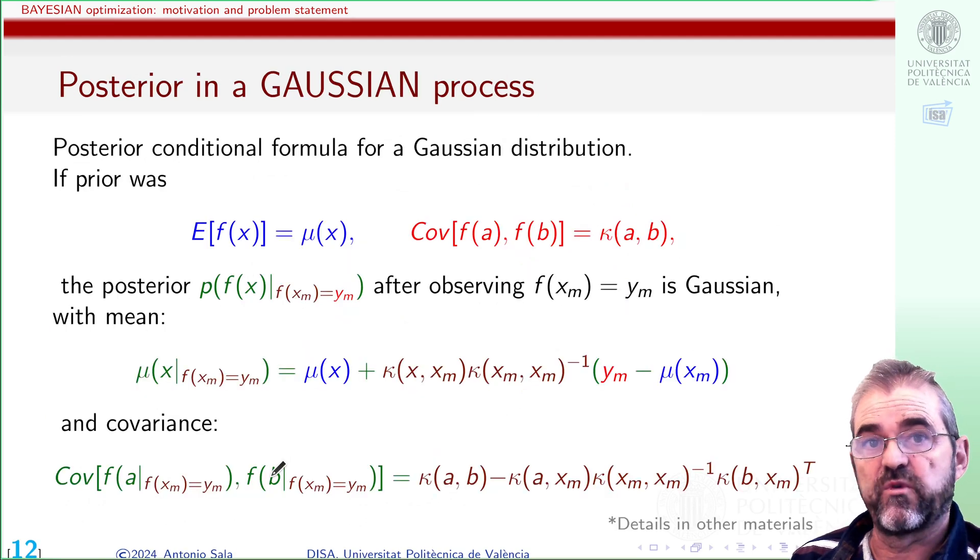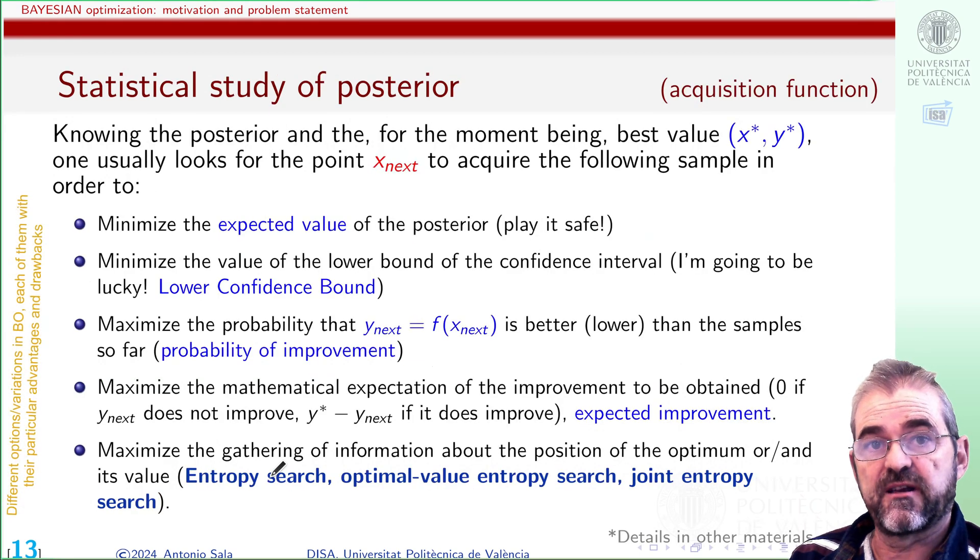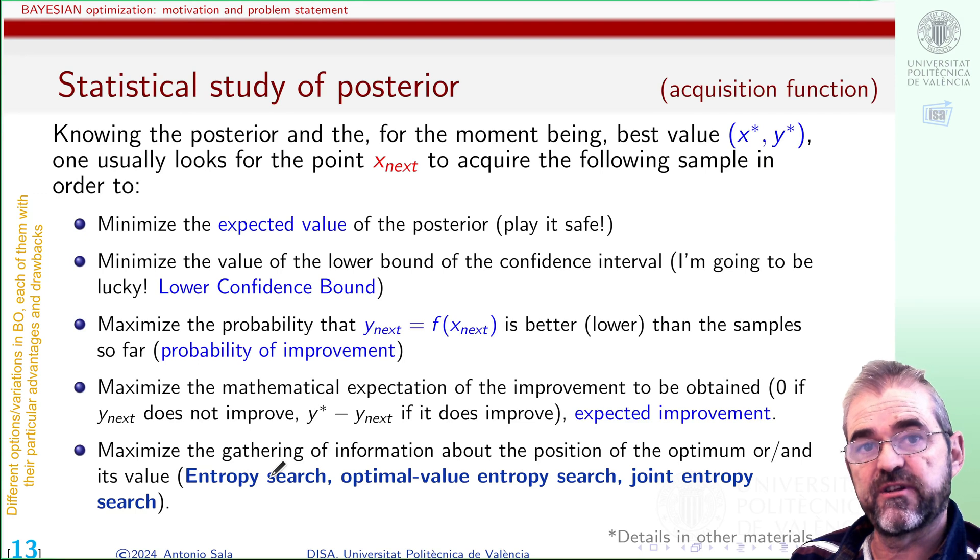The posterior is computed with these formulae, posterior conditionals in Gaussian distributions, and the statistical analysis has many options in literature, each of them striking a different balance between the exploration versus exploitation trade-off.